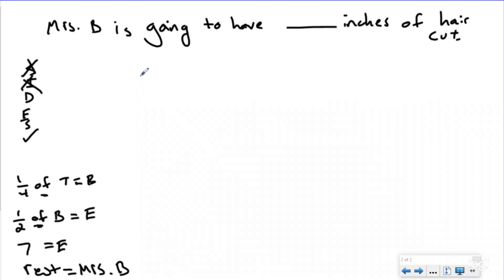It said 1/4 of the total was Mr. Butler, so I'm gonna draw my tape diagram here. Here's all the hair that was cut. I know that 1/4 of it was Mr. Butler, so I'm gonna split this into fourths and label this one as Mr. Butler.